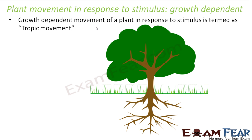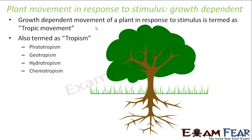These movements also happen due to a stimulus because there has to be a trigger for anything to happen. Why is the shoot growing upward? Why is the root growing downwards? There has to be a reason. So the reason behind these directional movements is the stimulus. These tropic movements are divided into many types depending upon the different types of stimulus, and they are also known as tropism.